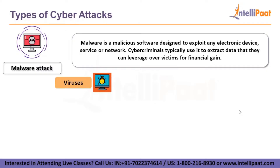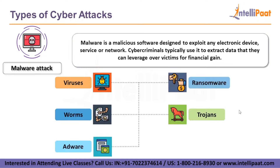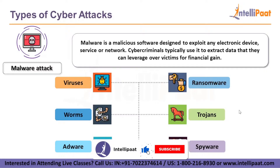First, we have viruses. A computer virus is like a flu virus — it is designed to spread from host to host and has the ability to replicate itself. In more technical terms, a computer virus is a type of malicious code or program written to alter the way a computer operates, designed to affect your device without your knowledge. If a third-party program adds malicious ad software onto your device without your consent, then it's illegal. And finally, spyware is a type of malware that is installed on a computer without your knowledge.